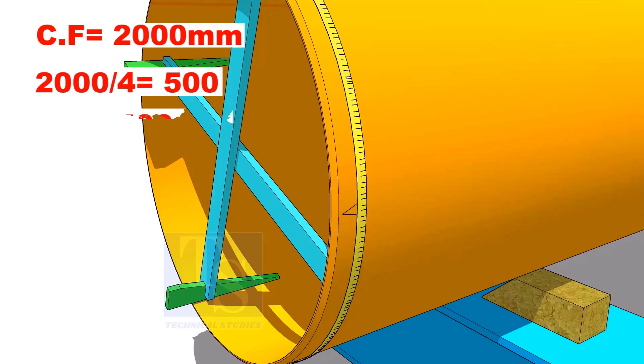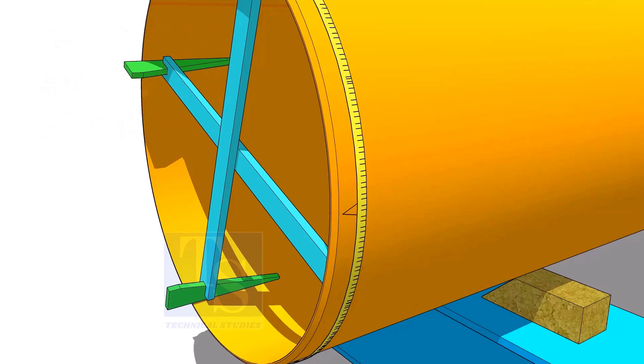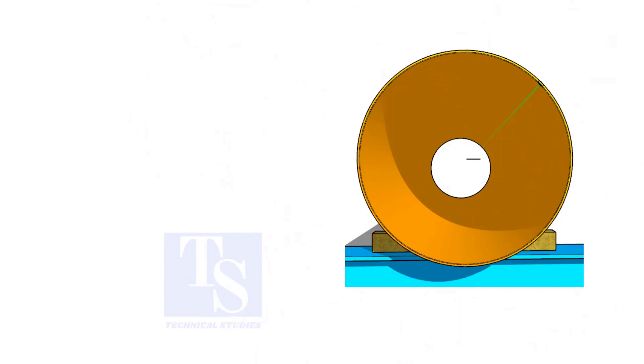Assume that the circumference is 2000 mm. Divide it by 4. Now you have the arc length of 90 degrees. Mark 500 mm each, starting from the center line as 0, 90, 180 and 270.